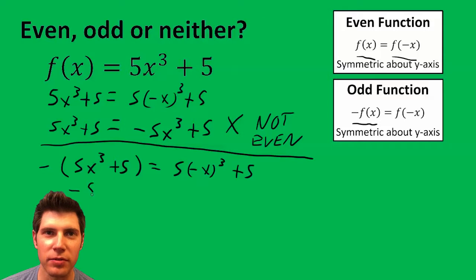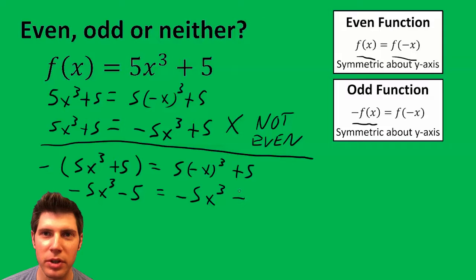Then we distribute. So we get -5x³ - 5 equals, and the negative times negative times negative is still negative, so it's -5x³ + 5.